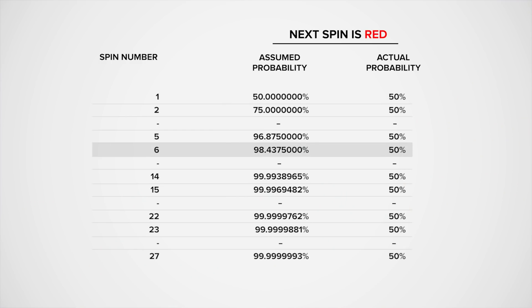Going back to the 1913 game: at the 6th spin, the actual probability of getting a red was 50%, but because of the gambler's fallacy, people at the casino calculated the probability of red as 98.43%. At the 15th spin, the miscalculated probability of red was 99.996%, while the actual probability was still 50% — essentially, almost a guaranteed red, and we're only at spin number 15.